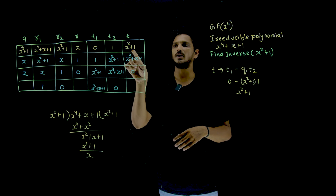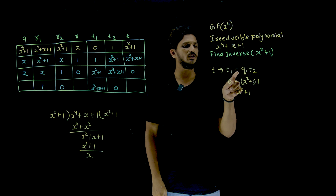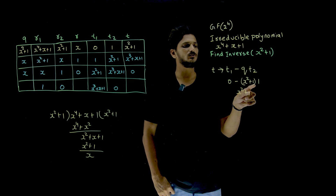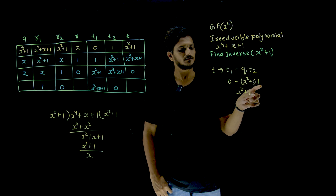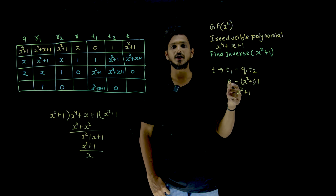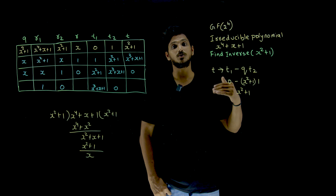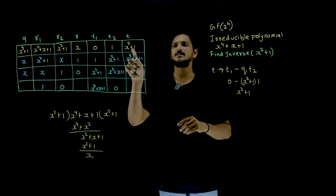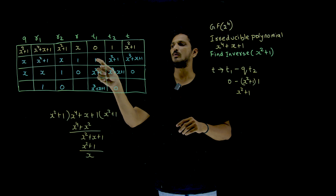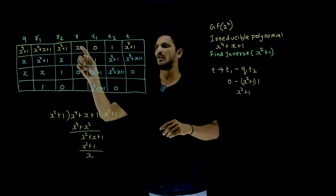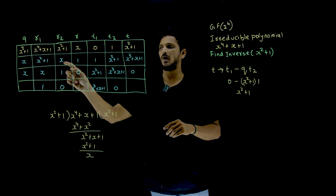Now you need to identify the t value. t = t1 − q * t2, where t1 is 0 and the quotient is x^2 + 1, multiplied by t2 which is 1, giving x^2 + 1. So 0 minus x^2 + 1 — using XOR operation — gives t = x^2 + 1. Then t2 becomes t1, t becomes t2, r2 becomes r1, and r becomes r2.